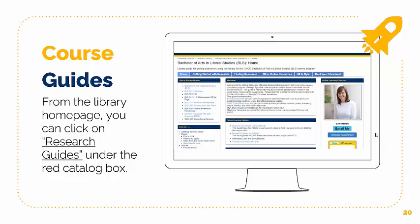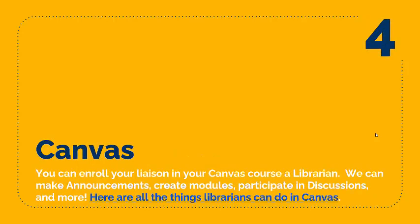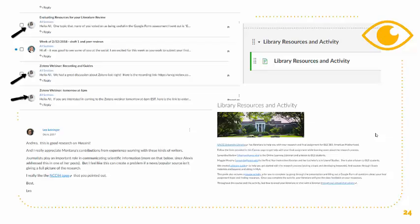Be sure to reach out to us if you want to learn more about this feature. We have a variety of options you can work with us on, including consultations where we can meet with you or your students to help with your specific research needs. We're very embedded in Canvas, the learning management system here at UNCG, and there are many things we can do within Canvas, including becoming a librarian in your course to help design, participate in discussions, and more. This is up to the individual liaison librarian, so be sure to reach out to your librarian to know what they can do for you in Canvas.